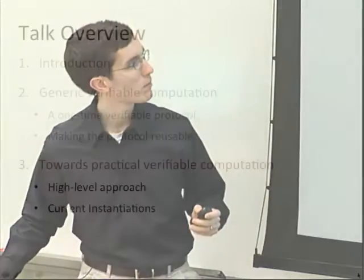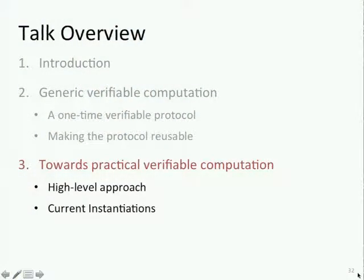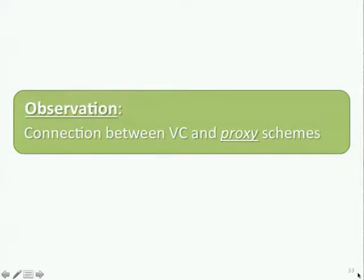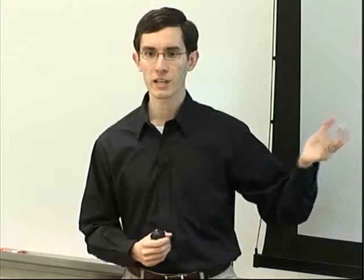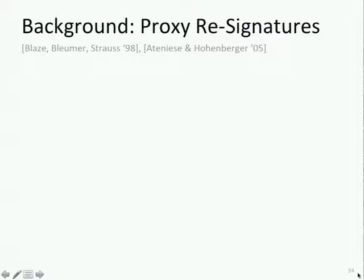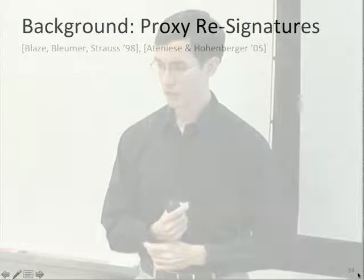Some of the work we've been doing here at MSR is looking at how we can make the system more practical—taking the same ideas but avoiding computation that takes on the order of weeks. The high-level idea is that there seems to be an interesting connection between verifiable computing and various proxy schemes: proxy re-signature schemes and proxy re-encryption schemes. As a reminder, proxy re-signatures were a primitive introduced by Blaze, Bleumer, and Strauss, and later more rigorously formalized by Ateniese and Hohenberger.